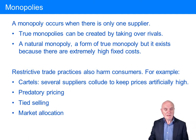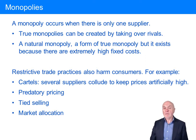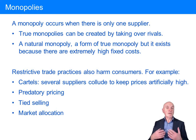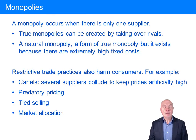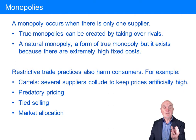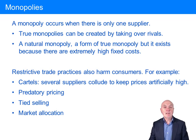Governments respond to monopolies through mergers commissions or equivalent organisations, which look carefully at the market positions of companies — how much of the market they control, whether they control too much or are too powerful in their ability to set prices or to go for predatory pricing. They also look at takeovers. So if you've got three companies supplying the whole market and two of them want to combine, thereby bringing the competition down to just two, that will probably be stopped because it's not in the interest of consumers to have only two competitors.